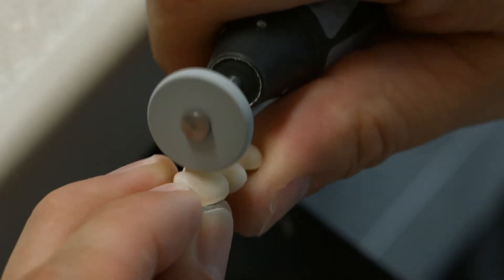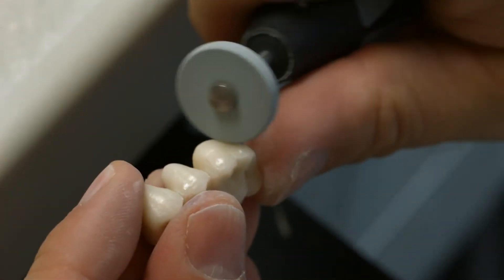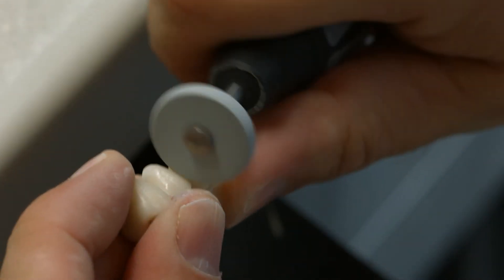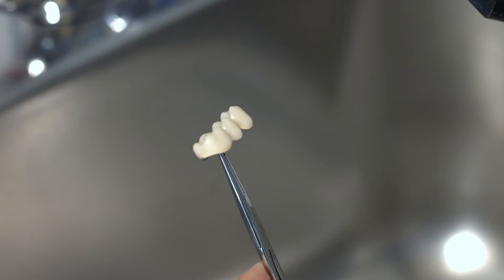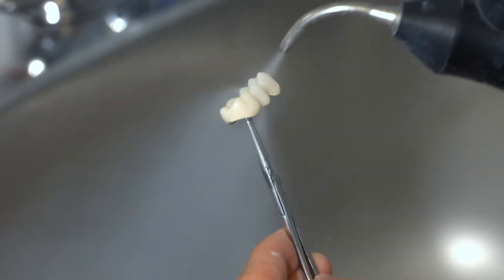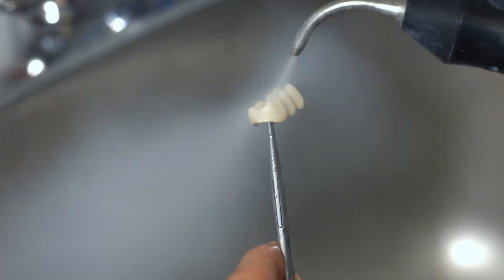The finished IPS Star Seram 1 restoration shows a natural-looking surface texture. Thoroughly clean the restoration with the steam jet and dry it with oil-free air.